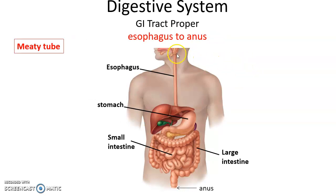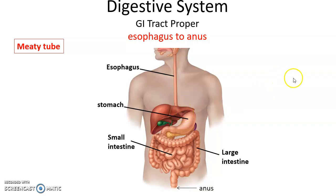From here we go to the esophagus. The esophagus connects the pharynx to the stomach. It passes through the neck, through the thoracic cavity, and ends at the very beginning of the abdominal cavity. From the esophagus to the anus, the gastrointestinal tract is a meaty muscular tube.